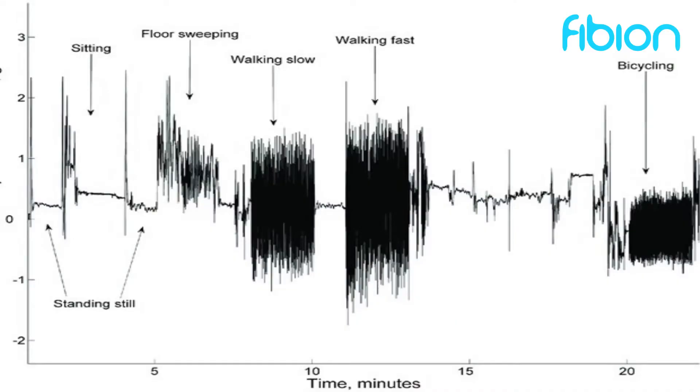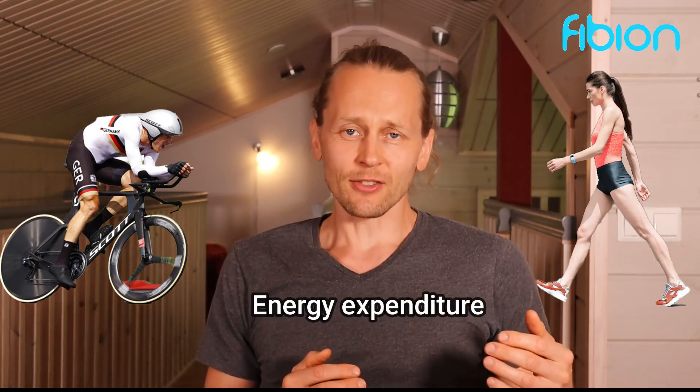This clearly has its limitations. Another approach is to have just one algorithm where the more acceleration you have, the higher the intensity. This makes sense within certain activities — for example, in walking, the faster your thigh is moving, the higher the intensity of walking. But this doesn't really make sense between activities. For example, comparing walking versus cycling: walking is weight-bearing, meaning you carry your weight the whole time, while in cycling the bike carries your weight. So energy expenditure and thigh movement differ, meaning one algorithm doesn't really work across different activities.